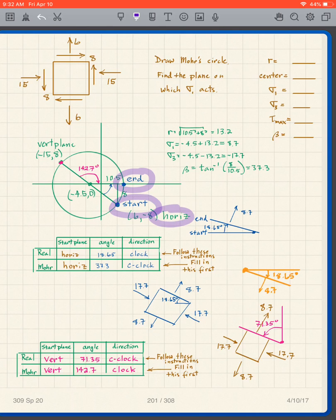And again, I have to fill this line out first. So I start at the horizontal plane, I go 37.3 degrees counterclockwise.